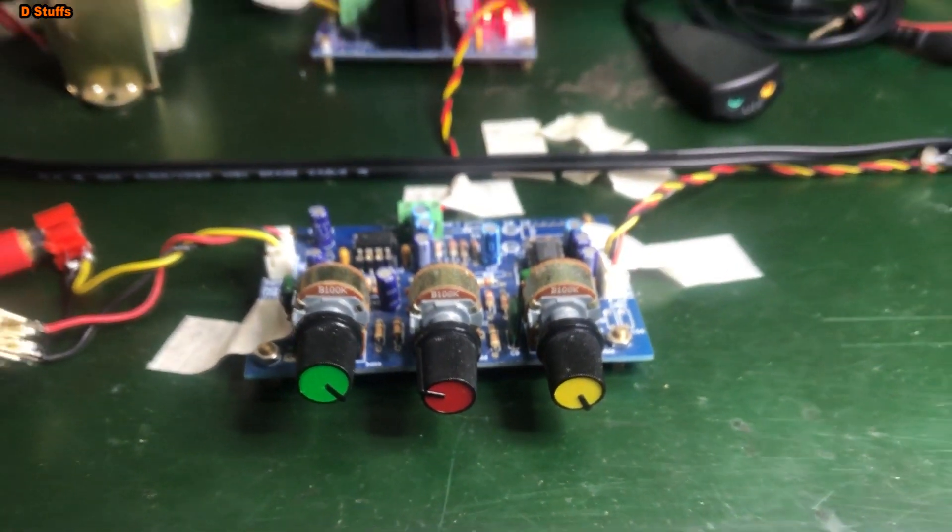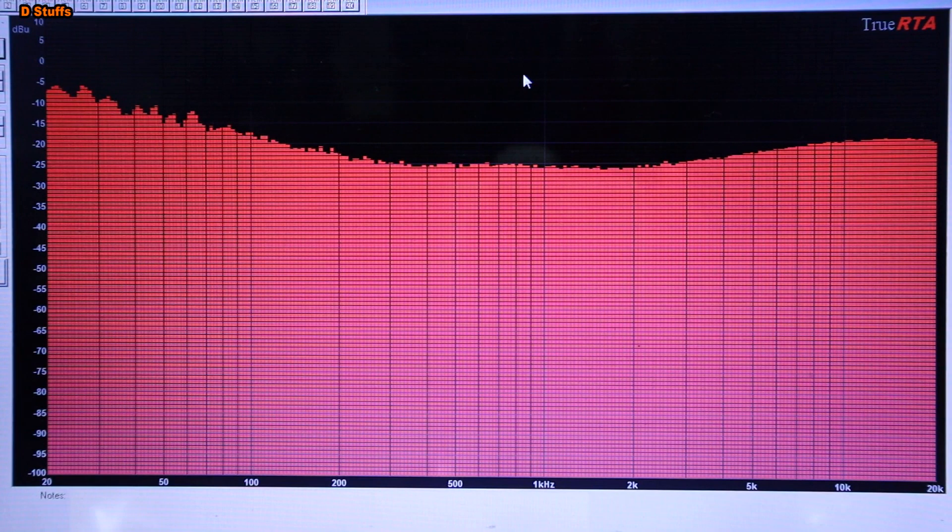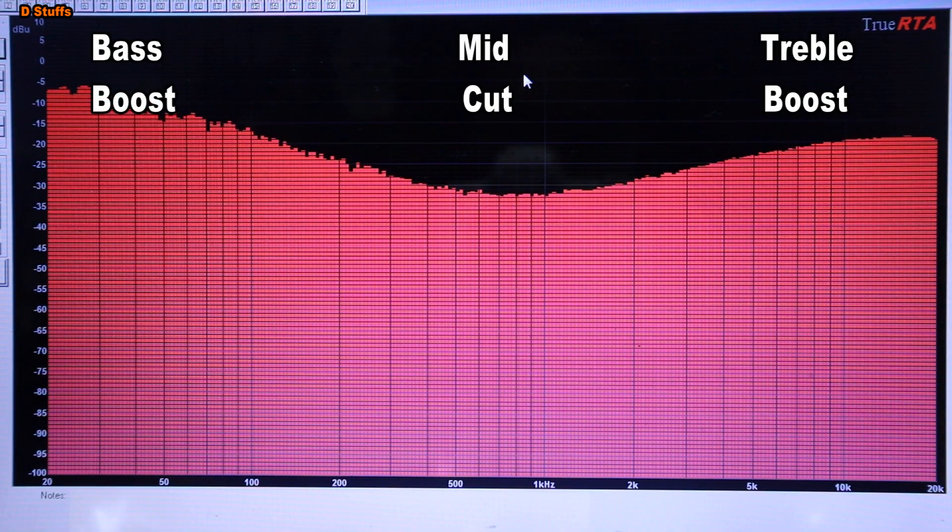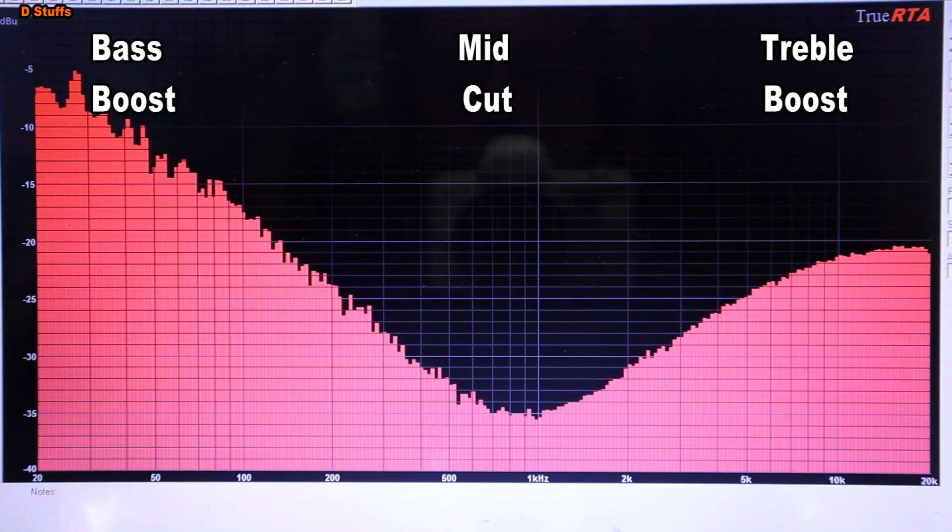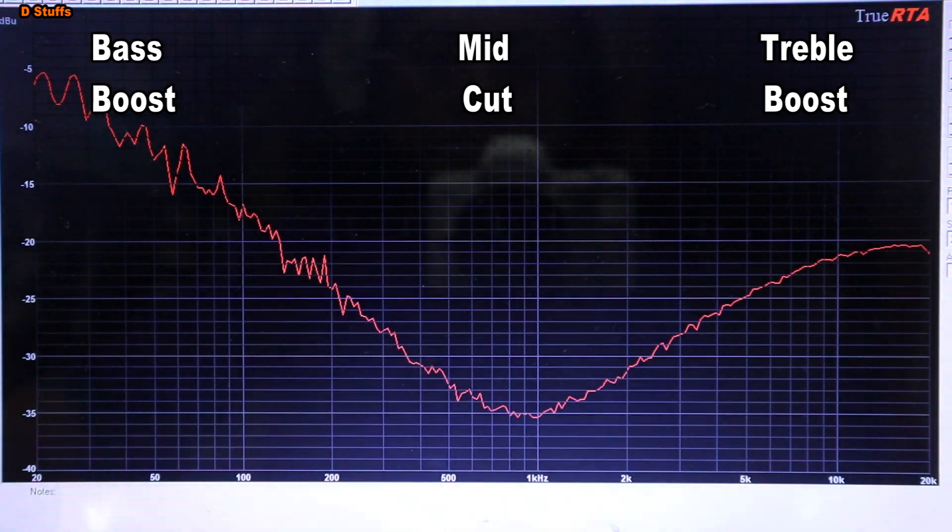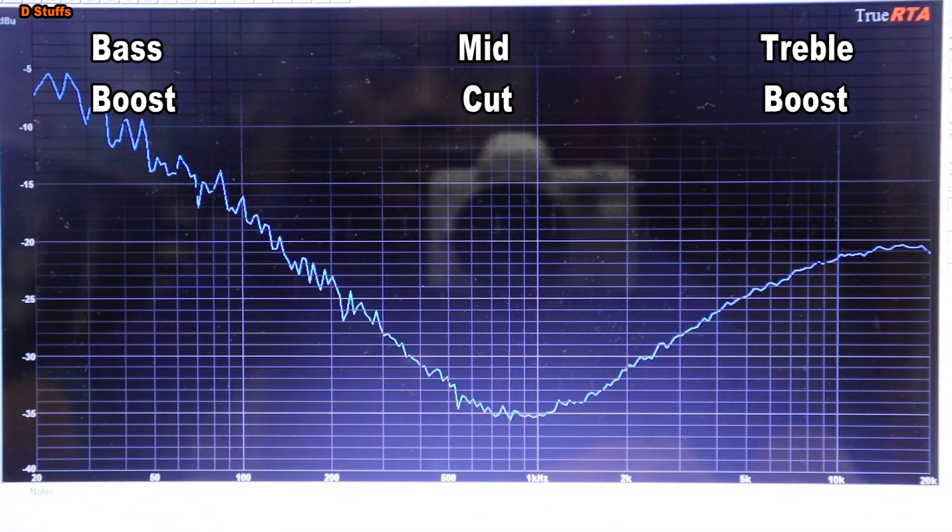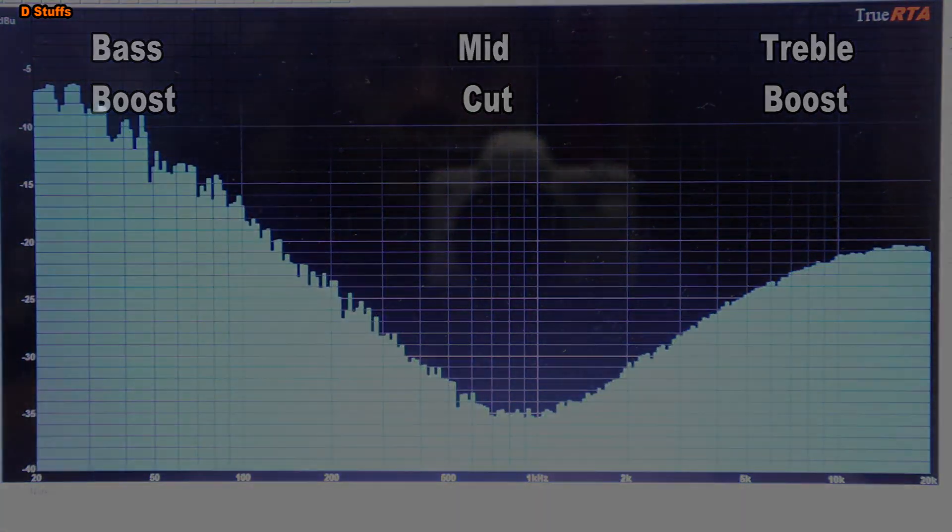I will take you to another test method using my PC in an application software called TrueRTA, which plots the spectrum from 20 to 20 kHz, and you can see from this graph how the response of the combination of three controls is really clear. The low and high frequencies were boosted, while the mid frequencies were attenuated. I will go deeper into tests in the next episode with the dB attenuation and boost at the desired frequencies.